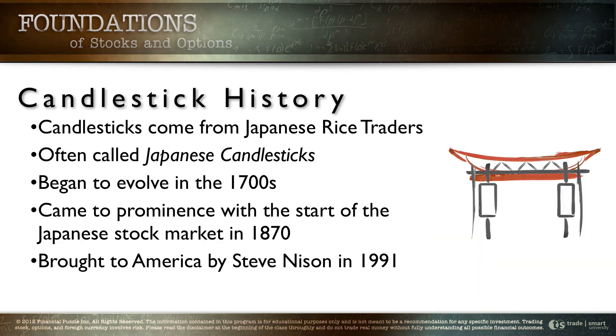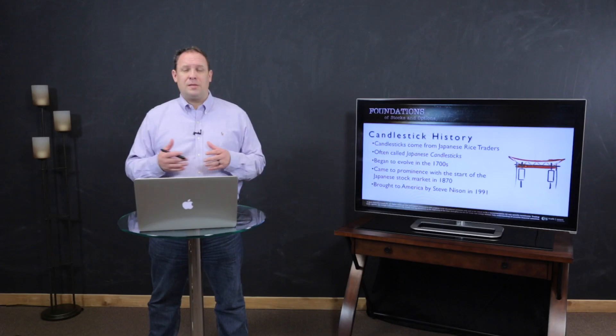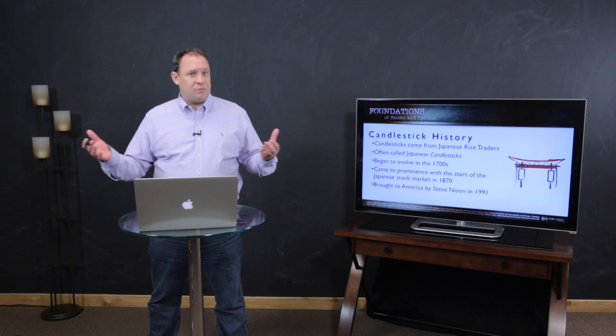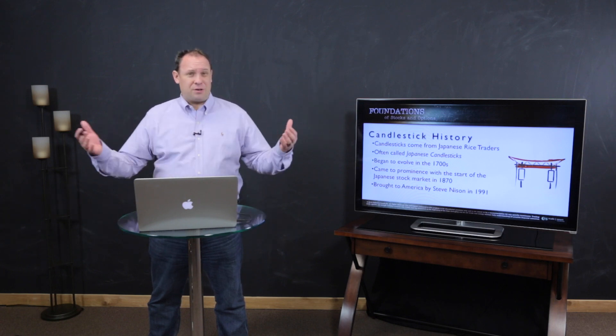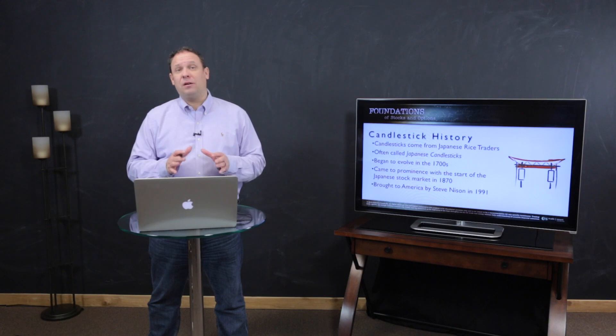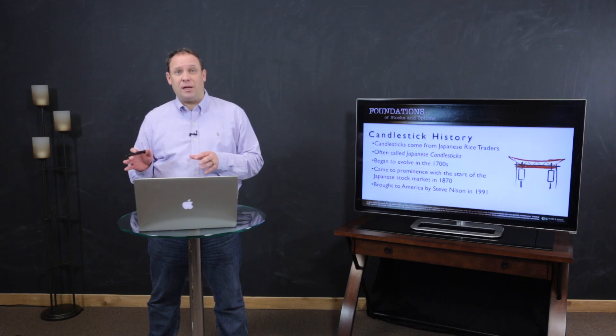As we talk about candlesticks the first thing I'd like to share with you is the history. Candlesticks actually come to us from Japan and a very deep history of Japanese rice trading. If you're not familiar with Japanese rice trading it started in the late 1600s and into the 1700s and that whole Dojima rice exchange that evolved out of Japan really became one of the first futures trading markets that we've had in the world. It was a very well-established exchange with a lot of trading activity and technical analysis history evolved out of that exchange.